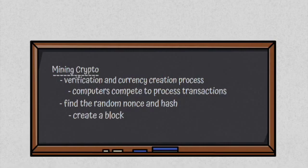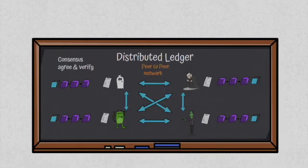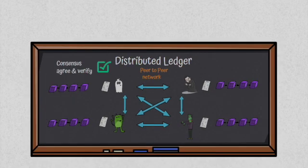New blocks are broadcast to the network. Blocks are verified by the nodes, and when a majority of nodes agree, a consensus is reached. The block is validated and gets added to the blockchain.